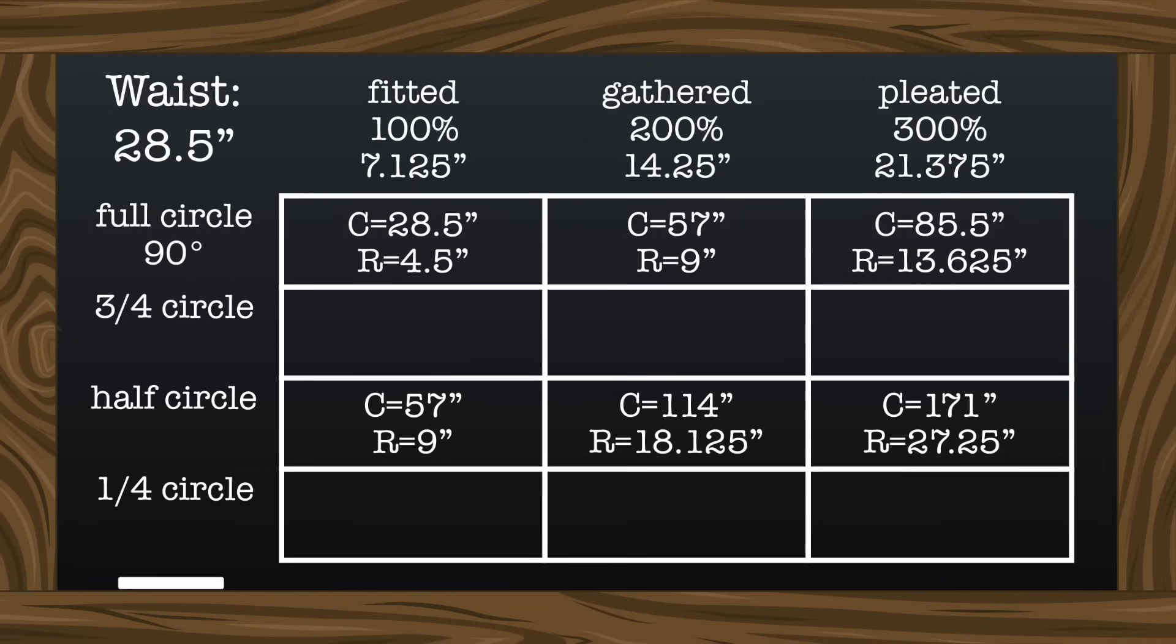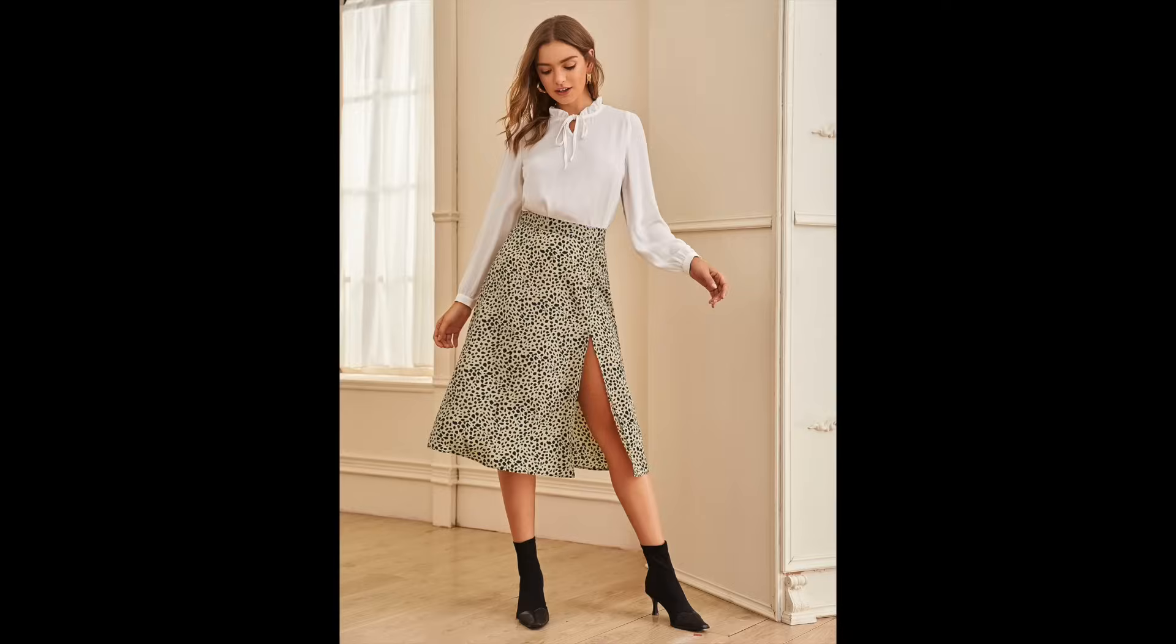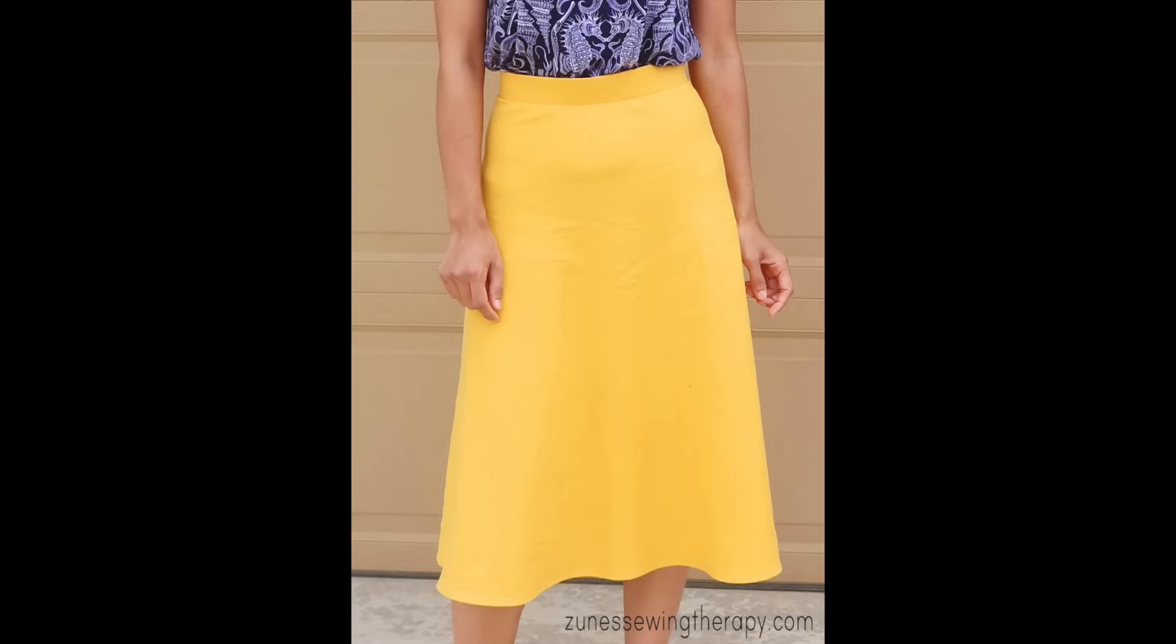Now I'm going to repeat this entire process again, halving and doubling the measurements to make a quarter circle skirt, which is basically an A-line skirt, or a skirt that is almost straight, but has a tiny bit of flare.